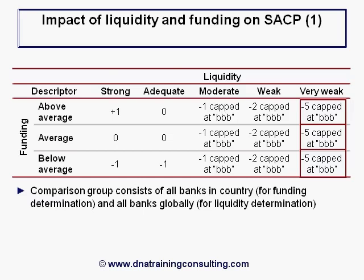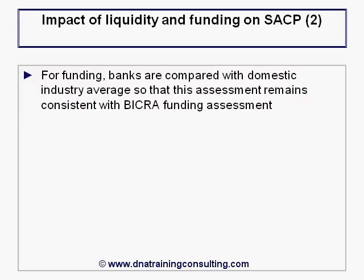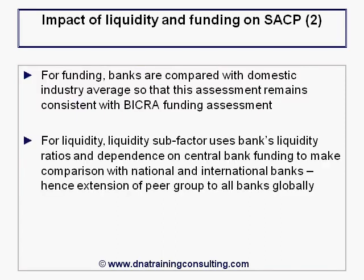For funding, banks are compared with the domestic industry average so that the assessment remains consistent with the BICRA funding assessment. For liquidity, the sub-factor uses a bank's liquidity ratios and dependence on central bank funding to make a comparison with national and international banks, hence the extension of the peer group to all banks globally. We turn next to more detailed commentary provided by S&P on each of these four SACP rating factors.